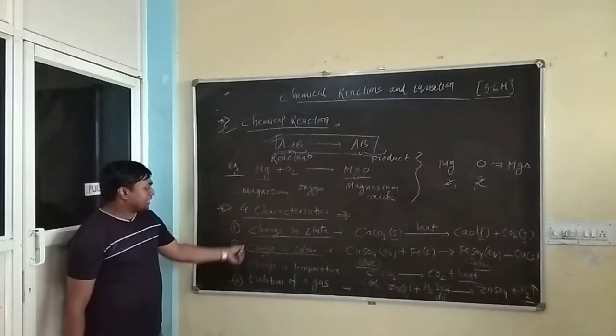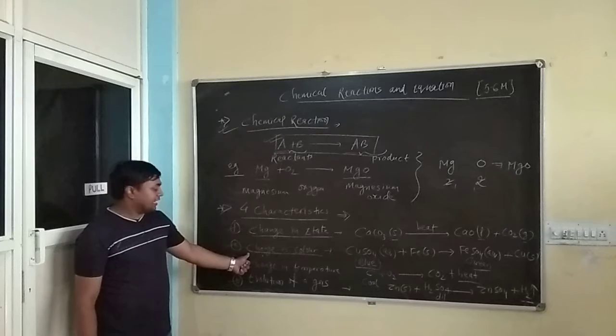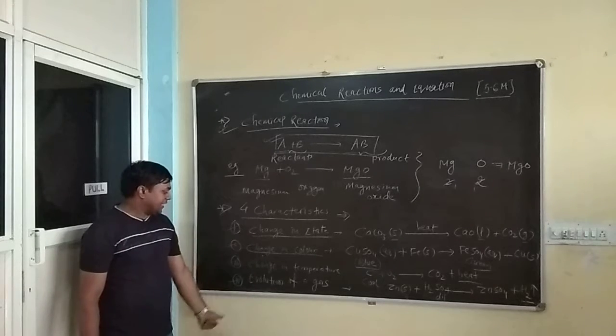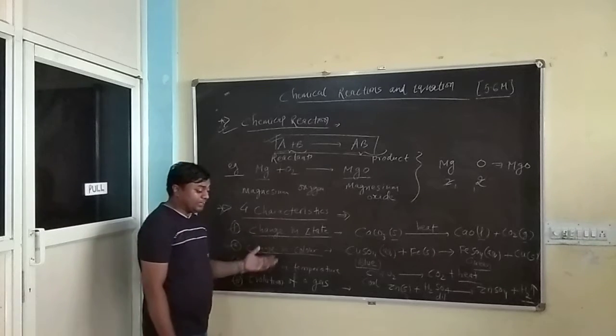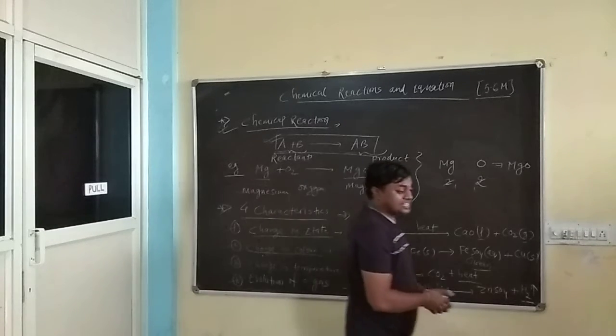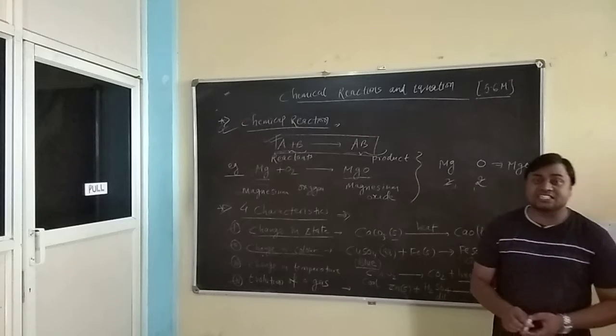What are the 4 characteristics? Especially change in state. 2nd one change in color. 3rd one change in temperature. 4th one evolution of gas. If any of the following changes takes place then we can say chemical reaction has taken place.